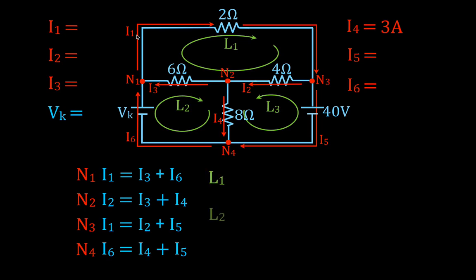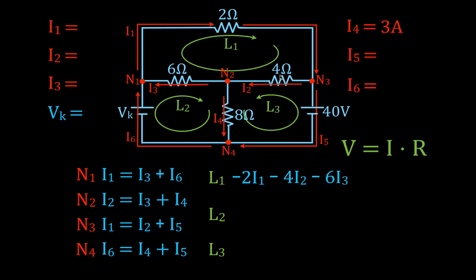Now we're going to apply the voltage rule for each of the loops, starting with loop number one. I like to start at the upper left-hand corner and go clockwise. The first thing we encounter is the 2-ohm resistor. Using Ohm's law, voltage equals current times resistance. The current is I1 and the resistance is 2. We're going with the current, so it's a voltage drop: negative 2I1. Continuing, we encounter the 4-ohm resistor: minus 4I2, and across: minus 6I3. We set that equal to zero.